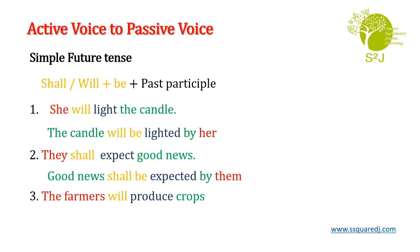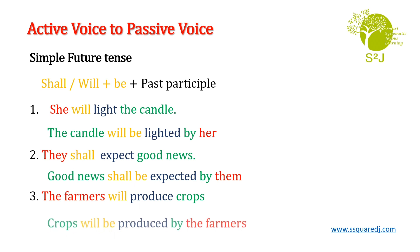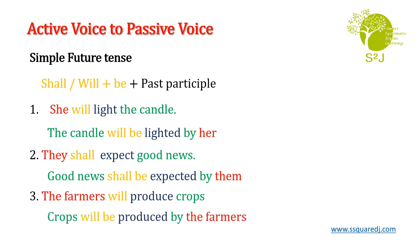The third example: 'The farmers will produce crops.' The sentence will change as: 'Crops will be produced by the farmers.'